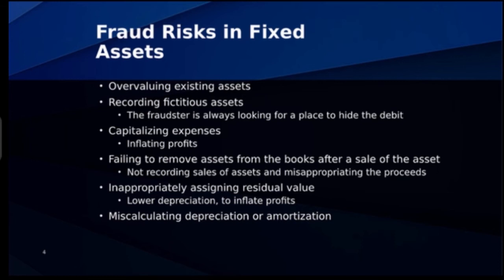In large multinational companies, subsidiaries or geographical units might use the purchasing power of the parent entity to buy assets like automobiles that appear to be company cars. When you investigate, you might find local management is buying those cars and selling them but leaving them on the asset side. As an auditor, you want to verify fixed assets they're acquiring. Management could also inappropriately assign large residual values to assets so they depreciate less, reducing depreciation expense on the income statement and inflating profits.